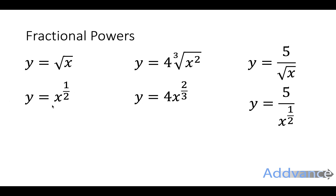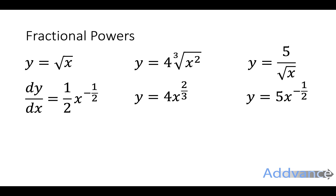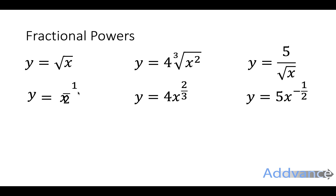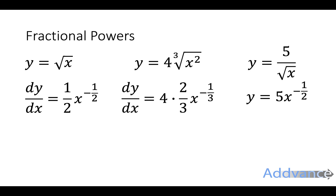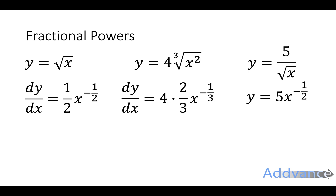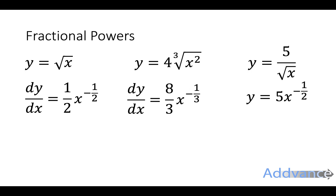For y equals x to the power half, we bring the power down and take one off: a half minus 1 is minus a half. So the answer is a half times x to the power minus a half. For y equals 4x to the power 2 over 3, the 2 over 3 comes down, and 2 over 3 minus 1 is minus a third. 4 times 2 over 3 gives 8 over 3, so the result is 8 over 3 times x to the power minus a third.